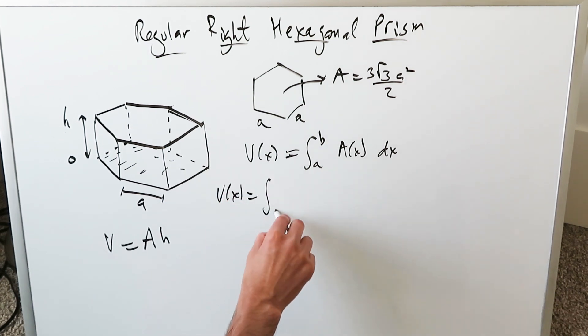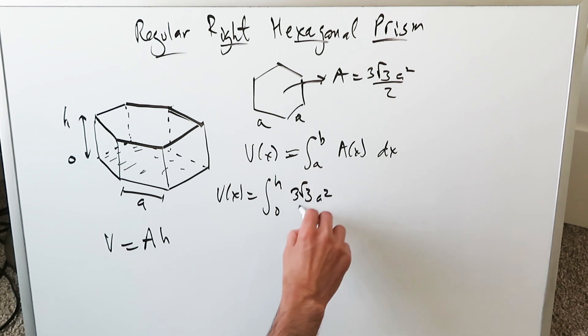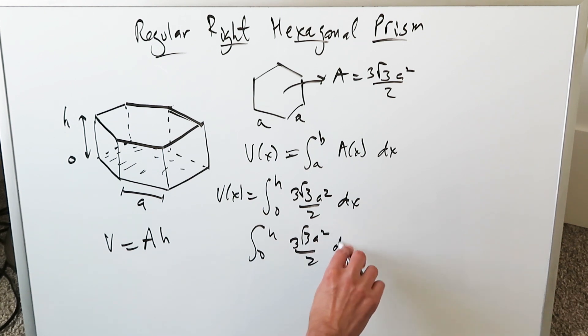Volume with respect to X would be 0 to H. That right there is my area: 3 root 3 A square over 2 dx. You can even say 0 to H, 3 root 3 A square over 2 dy. Volume with respect to y. It doesn't matter. Either of these outcomes is the same.